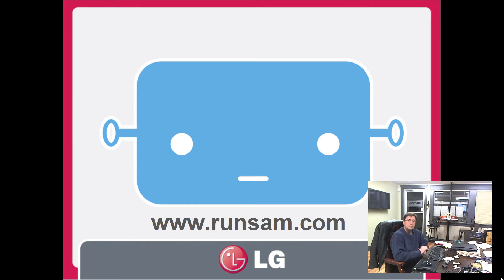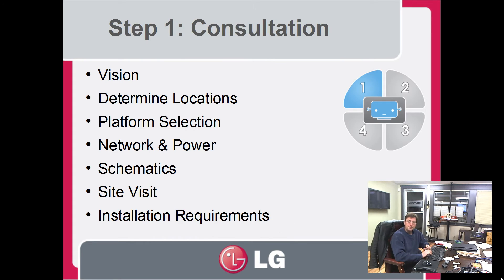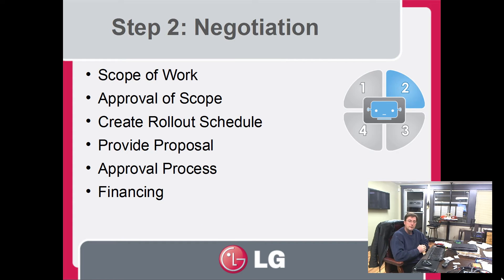SAM is a platform that allows us to track everything that needs to happen with a large-scale deployment — from the initial consultation, through to the negotiation stage, through to the actual implementation of the network, through to the things that come back to us for ongoing delegation. The consultation would be a visit, determine what locations need to be installed, choose which software and hardware platform to roll out with, what the networking looks like, powering the locations, schematics of the actual installs, do a site visit, and then look at what installation requirements are for the test location.